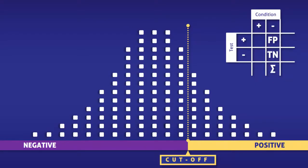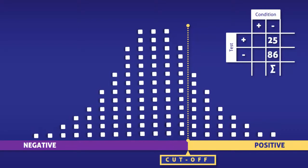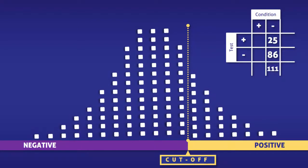After counting the white squares, we find that there are 25 false positives, 86 true negatives, and 111 people without the condition.